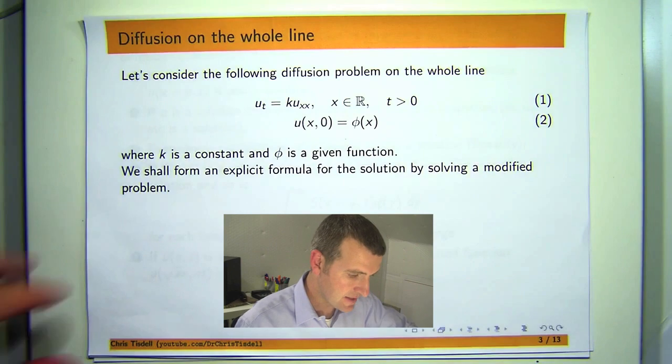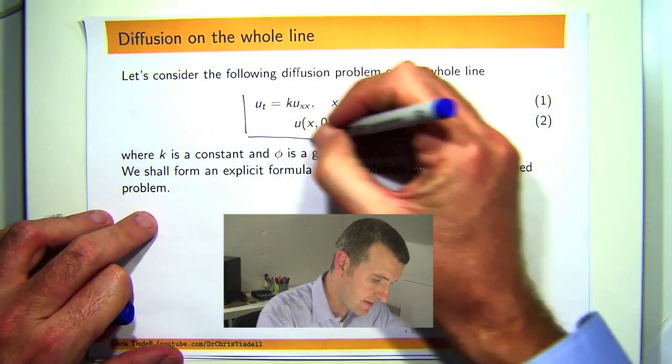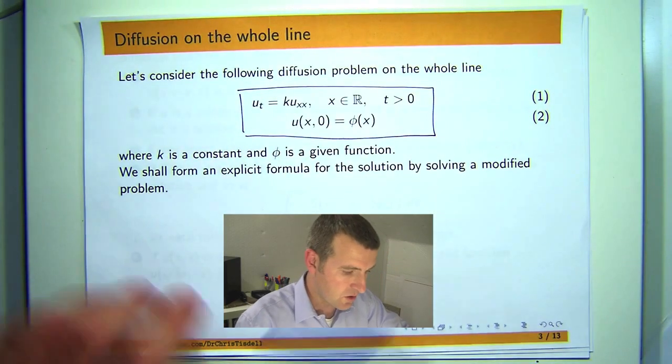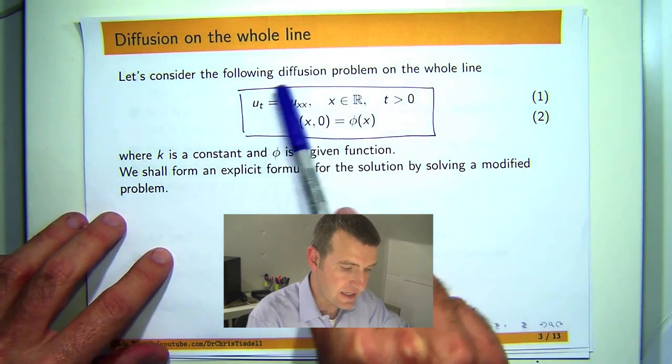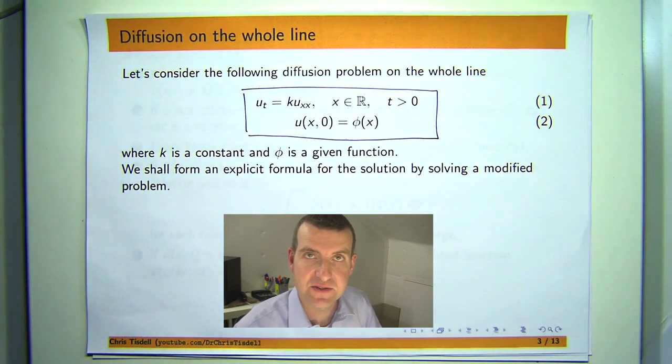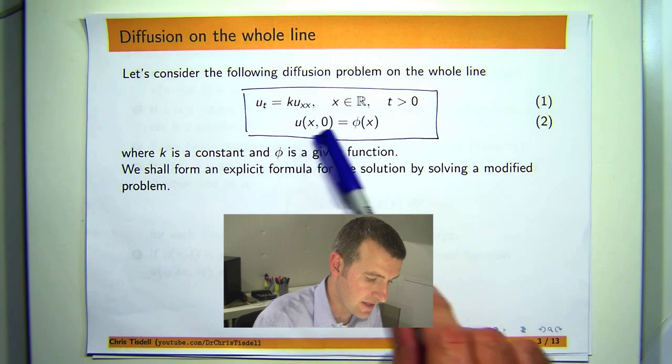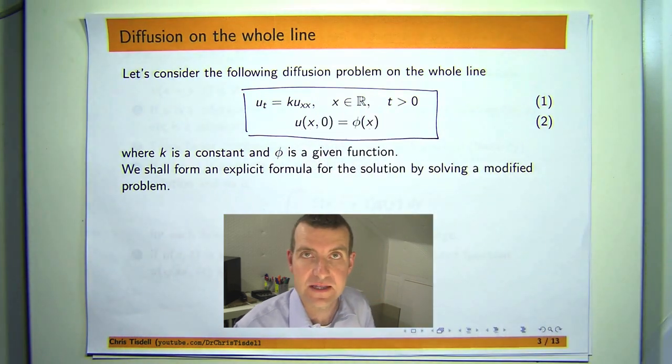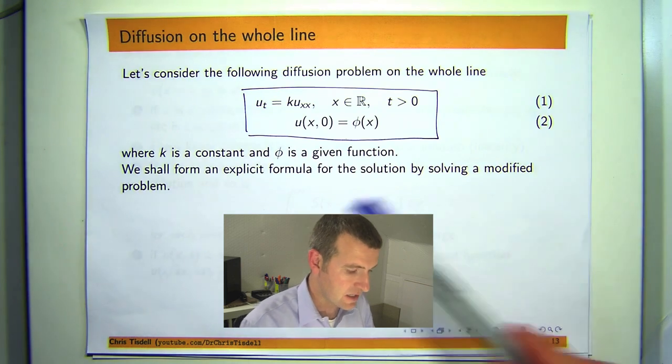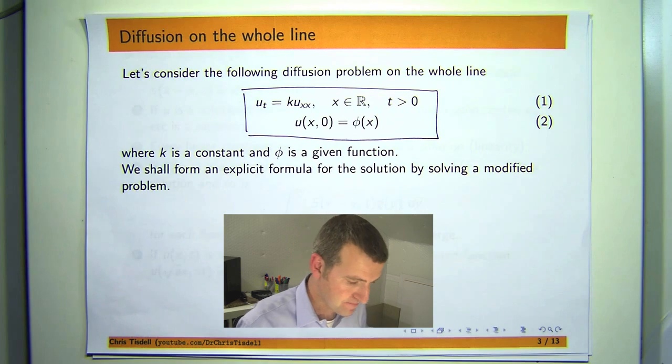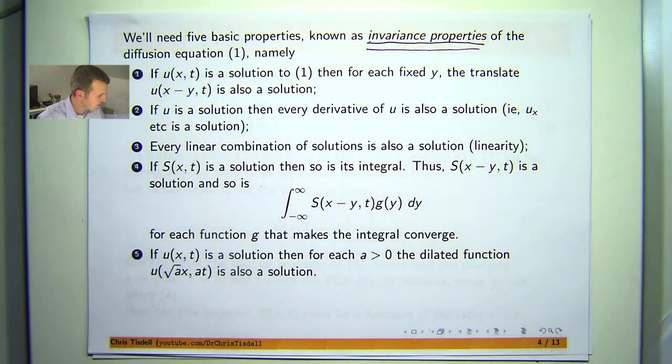So this is the particular problem that we're going to look at. You've got the diffusion or heat equation here. You've got some Cauchy data, so if u, for example, represents temperature, then at time T equals zero, this phi function would represent the initial temperature.